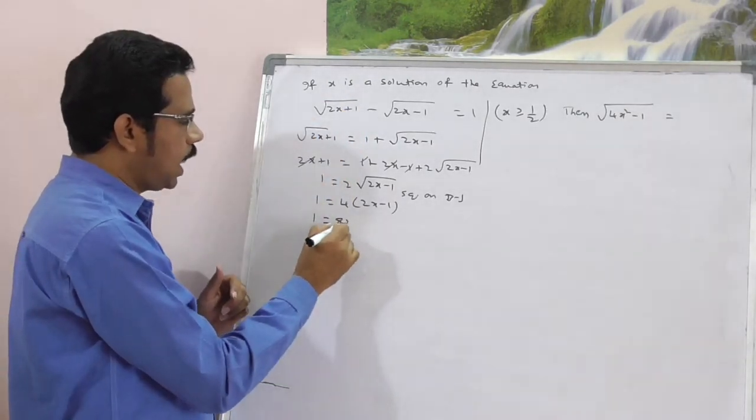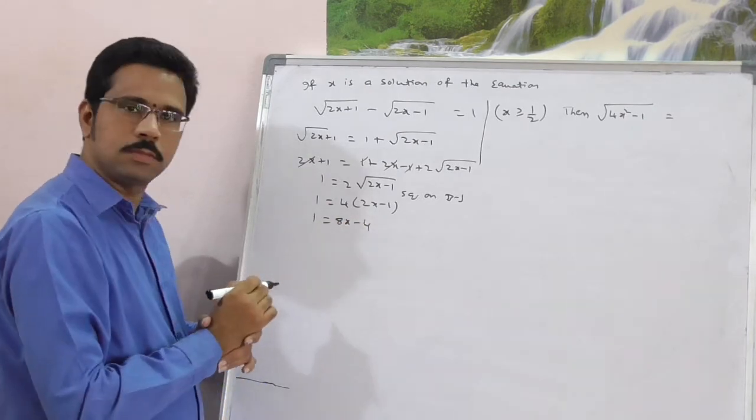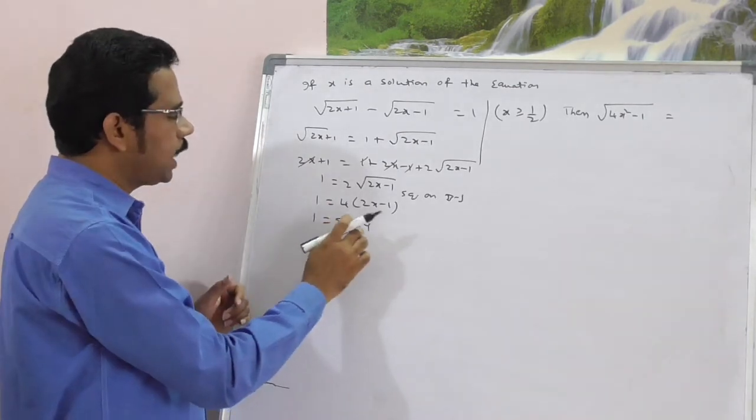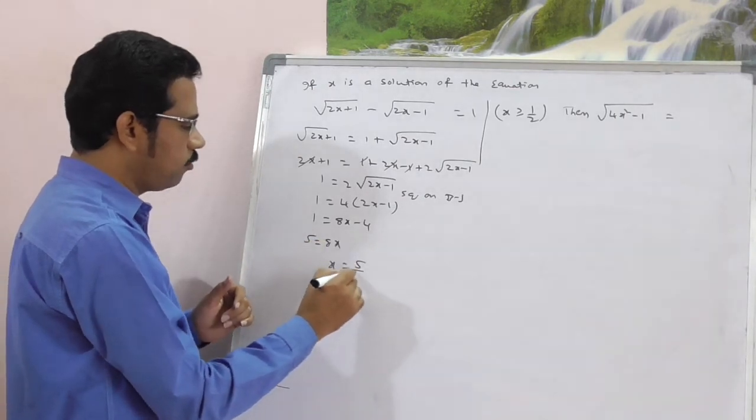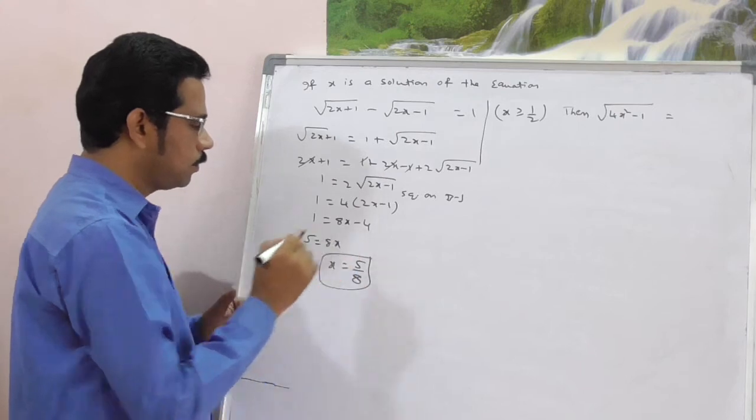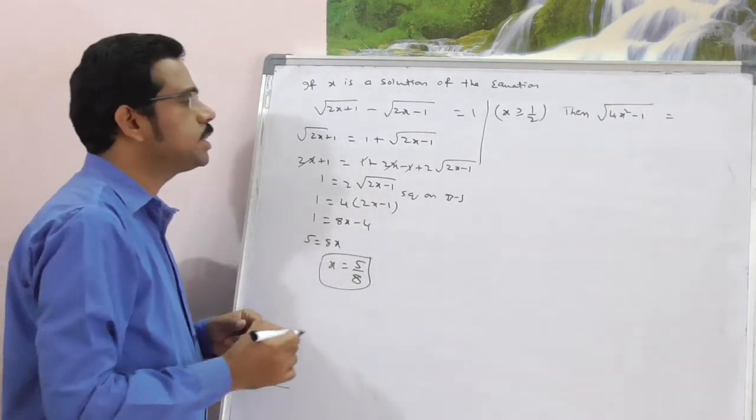Now, here it is 1 is equal to 8x minus 4. If 1 is equal to 8x minus 4, that is 5 is equal to 8x. What is x? x is equal to 5 by 8. If x is equal to 5 by 8,